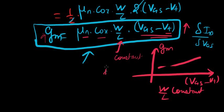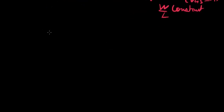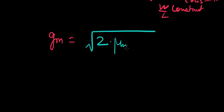Now let's look at, I'm going to give you a small exercise but I will give you a different form of GM. Okay. It is given by root of 2 times mu N times C ox times W over L times ID. Okay. It is very simple to derive you just have to work on the previous equations I've given you in this discussion.